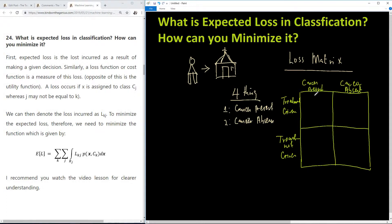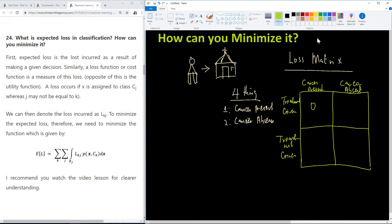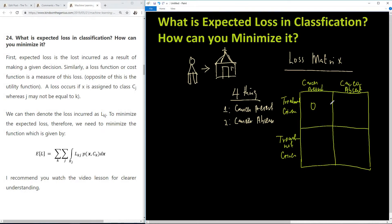Let's start with the first one. Cancer is present and treatment is given - perfect, so there is no loss. Now cancer is absent and treatment is given. In this case there is no cancer but you diagnose incorrectly and give treatment. There's a loss of one because it causes discomfort, loss of funds, and things like that.